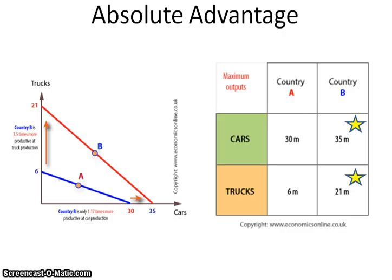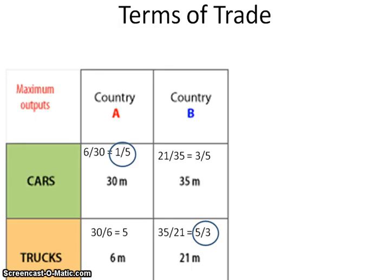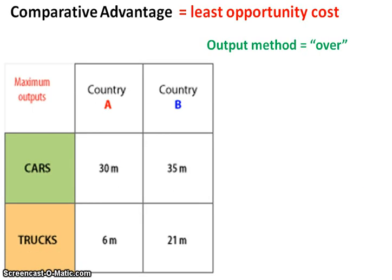That's a great test question — one country has an absolute advantage in both, and one answer choice says they shouldn't trade because country B can make the most of both. But you don't know if they have the least opportunity cost in both. When figuring out comparative advantage, you need to find who has the least opportunity cost. For the output method, think of the word 'over' — that's how you calculate opportunity cost.